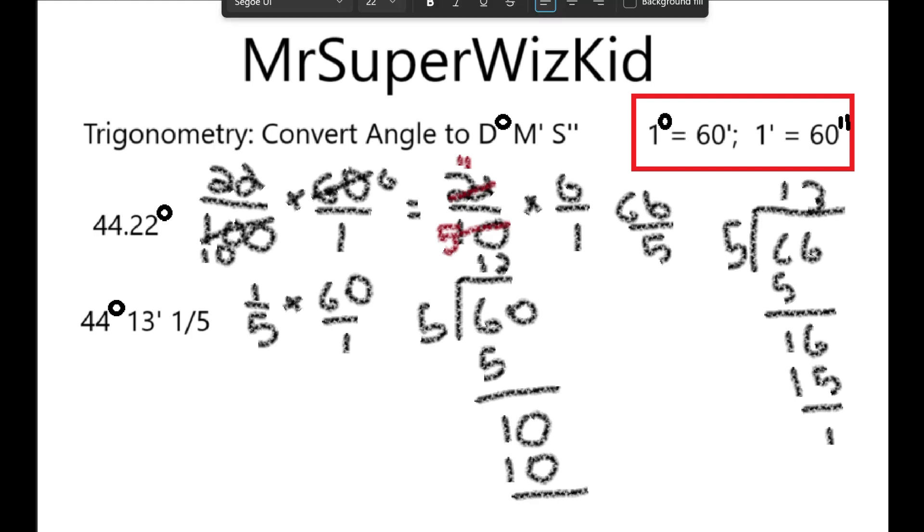So, the full amount would be 44 degrees, 13 minutes, and 12 seconds. 44.22 degrees is converted to 44 degrees, 13 minutes, 12 seconds.